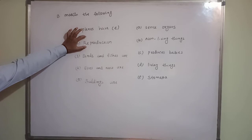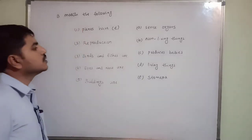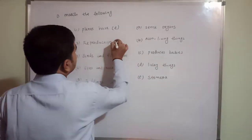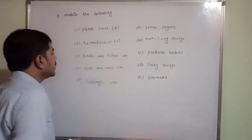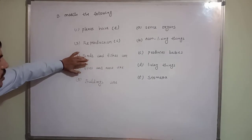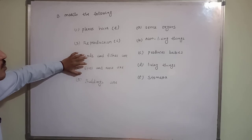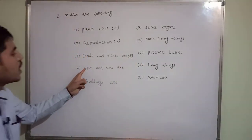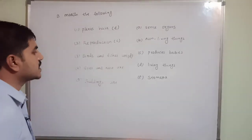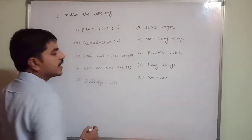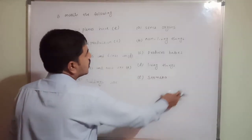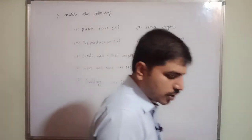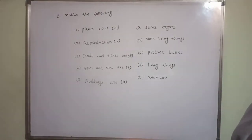Birds and fishes are living things, so D is the correct answer. Eyes and nose are sense organs, so A is the correct answer. Buildings are non-living things, so B is the correct answer. Is that clear for all? Very simple, very easy. Copy that information, then we will go for the next one.